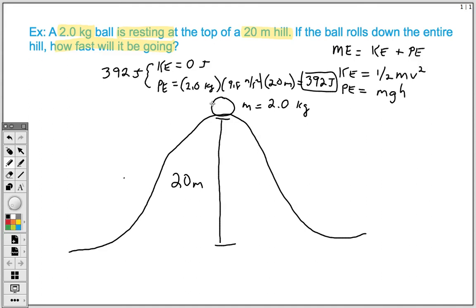So once this ball gets to the bottom, once it gets all the way to the bottom of the hill, we want to know how fast it's going. The total energy that we start with has to equal the total energy that we finish with. So when we solve for this at the bottom, we solve for its kinetic energy and its potential energy. We know that both of these guys together have to add up to our 392.